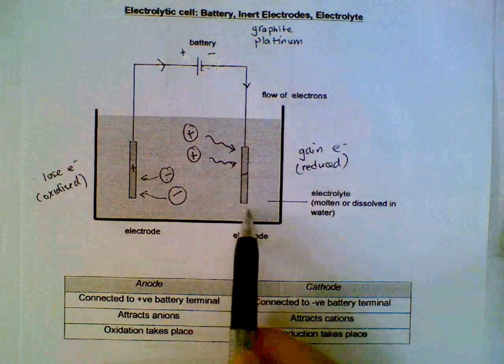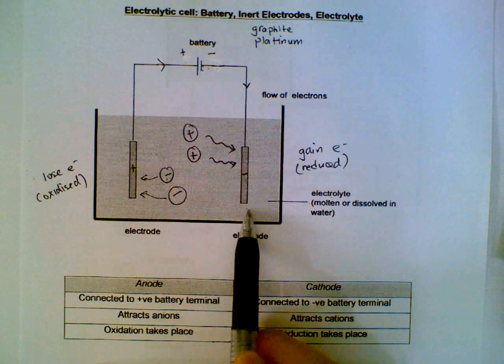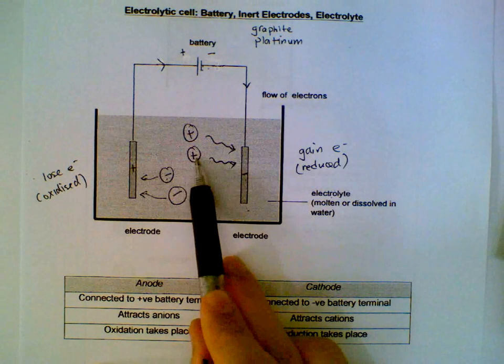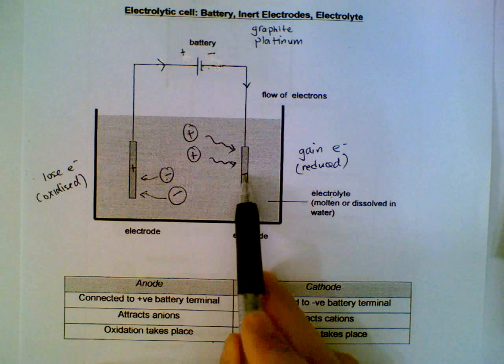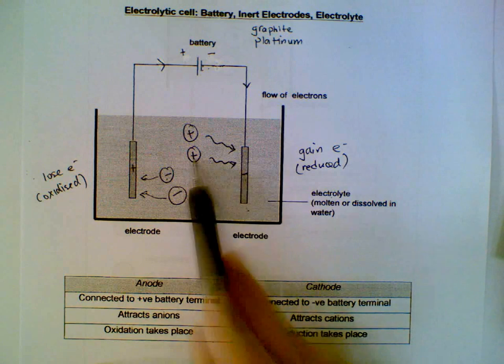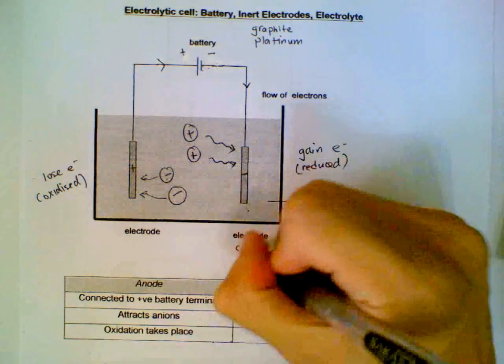How do we name these electrodes? There are several ways to remember. One way students do it is this electrode is negatively charged. It will attract cations. So they call this the cathode.